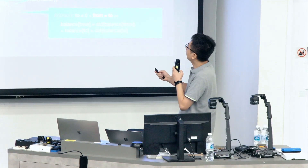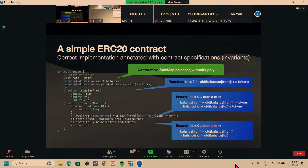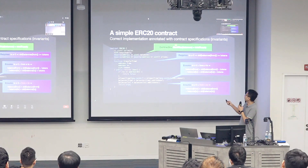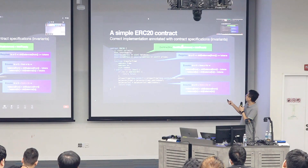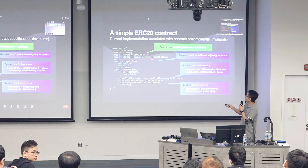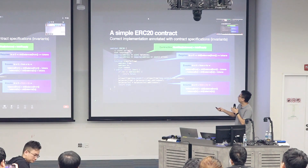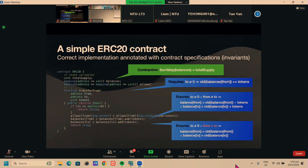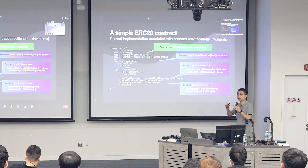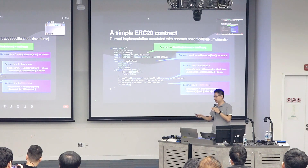There is also a contract invariant — a universal property that holds for all functions. For example, the sum of all balances in the mapping equals the total supply, because we use a mapping to track everyone's balance. This invariant says that if you sum all users' balances, they should always equal the total token supply — meaning you cannot create tokens out of thin air. With these specifications, we can detect all these errors.